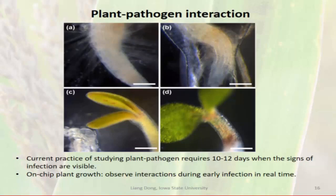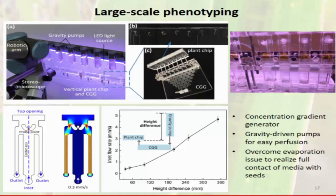On the device, you can also observe the interaction between pathogens and the plant—something that isn't visible when they are grown in soil. We set up a concentration gradient generator to produce different concentrations, put sensors to monitor oxygen and CO2 in the chamber, and optimized the chip to overcome evaporation issues during growth. These are ongoing works.